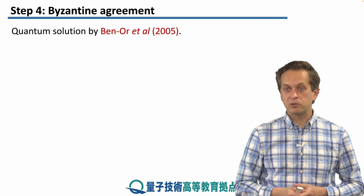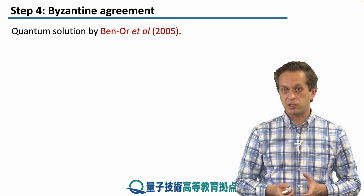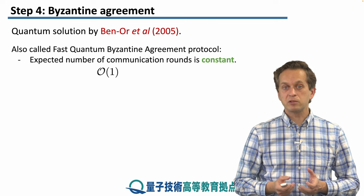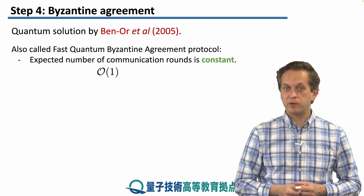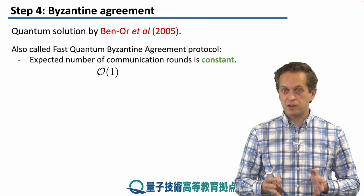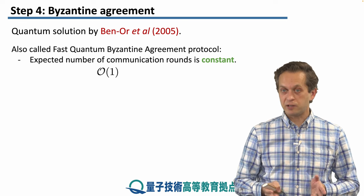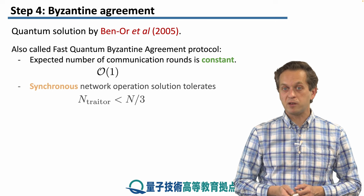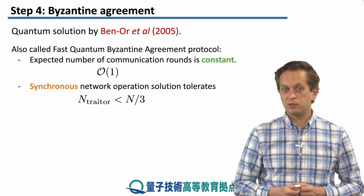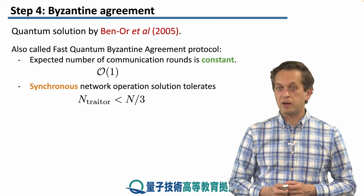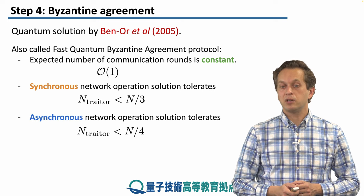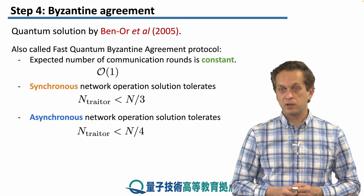There is also a quantum solution using distributed quantum states like GHZ states, by Ben Orr and collaborators from 2005, also called the fast quantum Byzantine agreement protocol, because the expected number of communication rounds is constant — it doesn't scale with the number of generals or the number of traitor generals. The synchronous network operation solution tolerates the number of traitors being bounded by n over 3, while the asynchronous network operation solution tolerates fewer than n over 4 traitors.